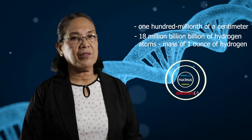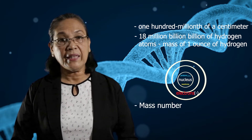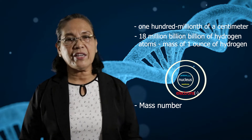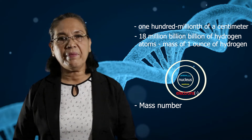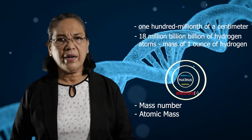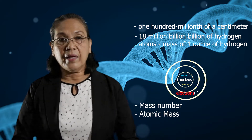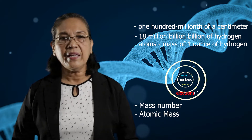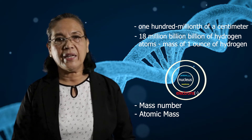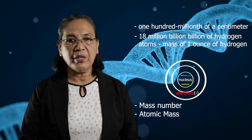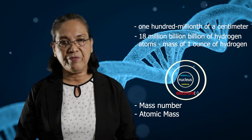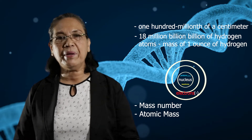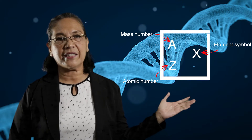An important thing to note about the atom is that it has an atomic number, which represents its relative atomic mass. The atom also has a mass number, and this mass number is the sum of the number of protons and the number of neutrons in the nucleus. An element can be represented by a symbol using these values.